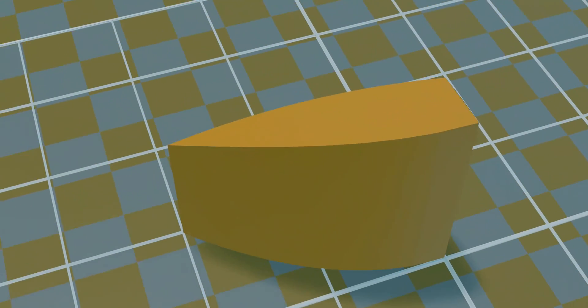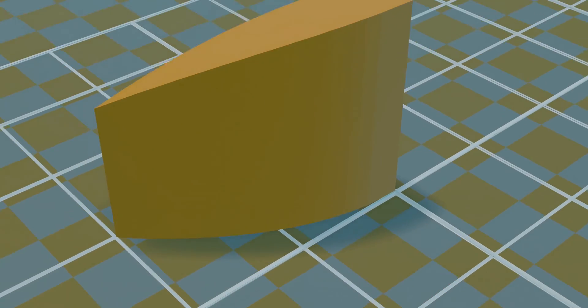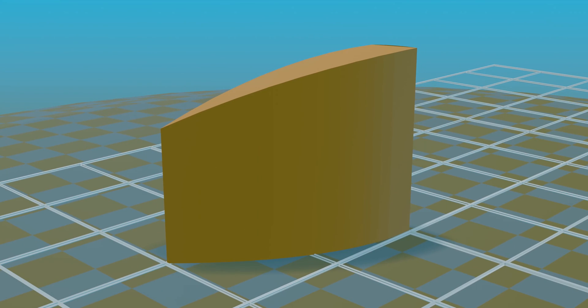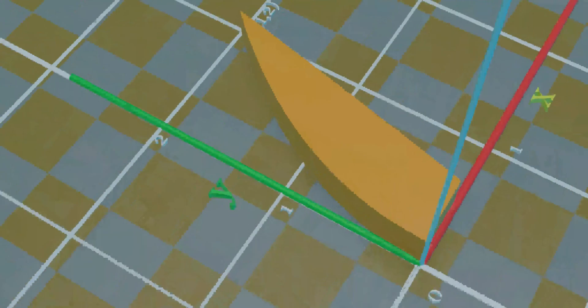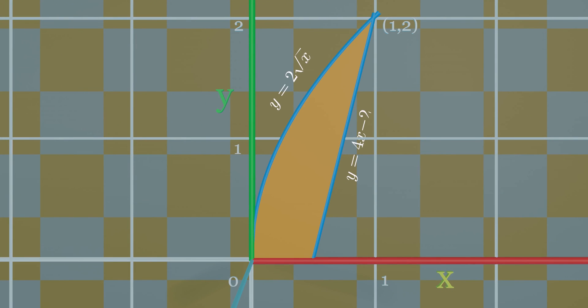All right, it's time for finding volume of the wedge. Our wedge lies above the region bounded by the two curves and the x-axis.